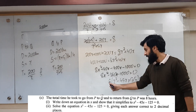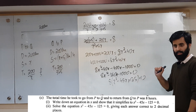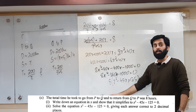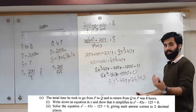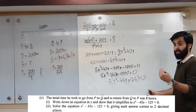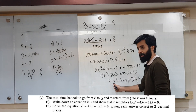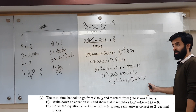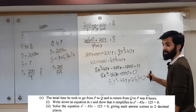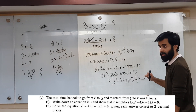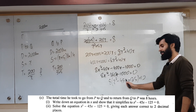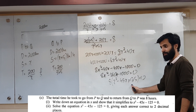The 8 factors out and divides into 0, giving 0. Since 8 is multiplied, it divides from 0 and disappears. We are left with x squared minus 45x minus 125 equals 0.